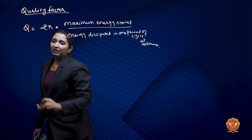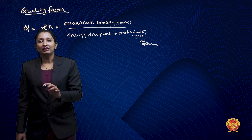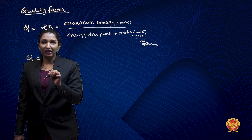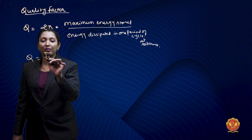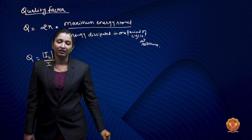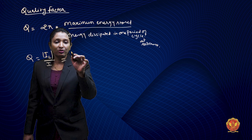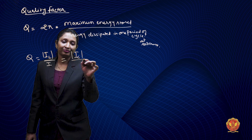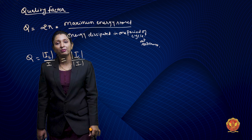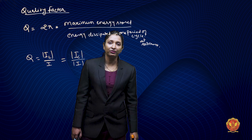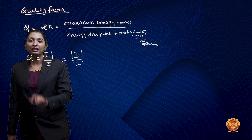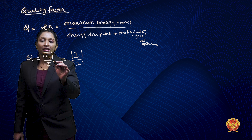Hello everyone. Now we are going to talk about parallel circuit, parallel resonance, bandwidth, and quality factor. What is the quality factor in parallel resonance? What happens in series resonance? The quality factor is defined as 2π into maximum energy stored divided by energy dissipated in one period of cycle.